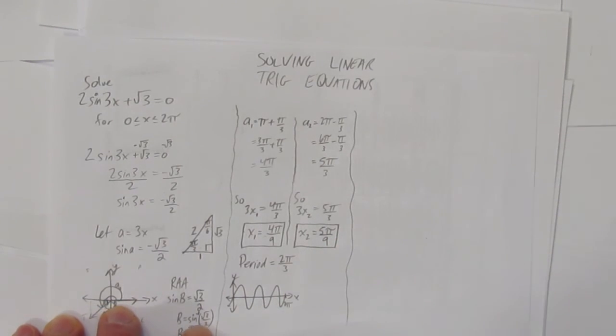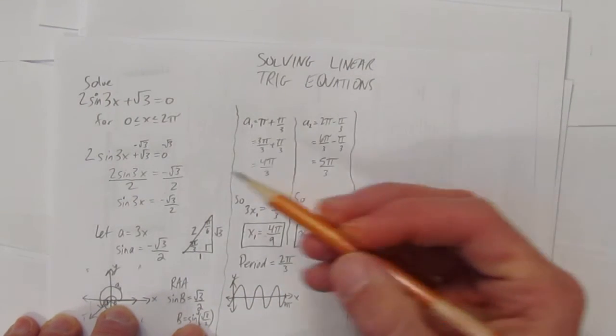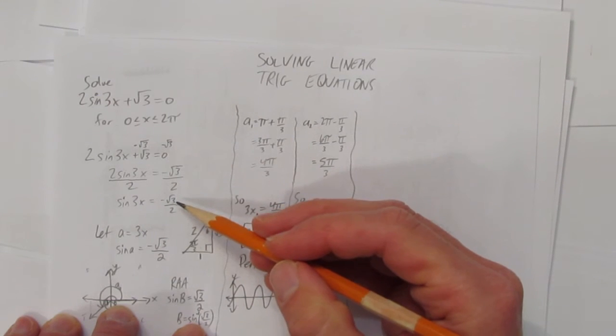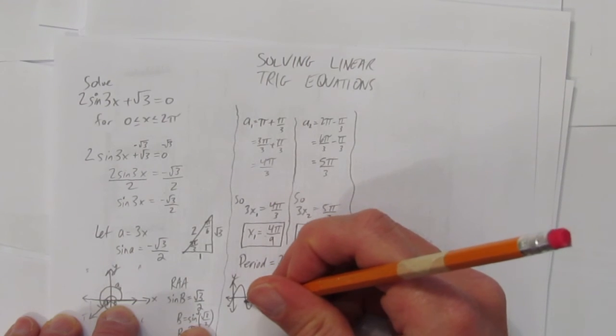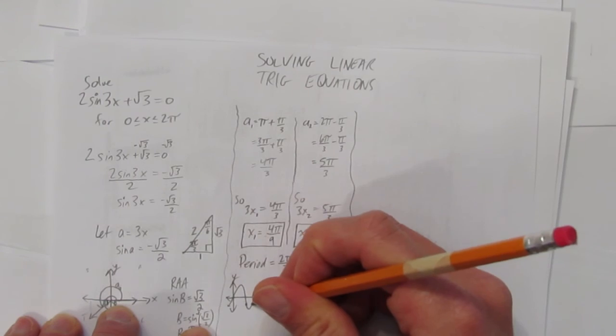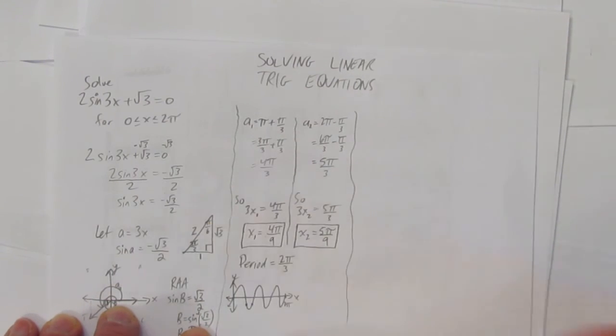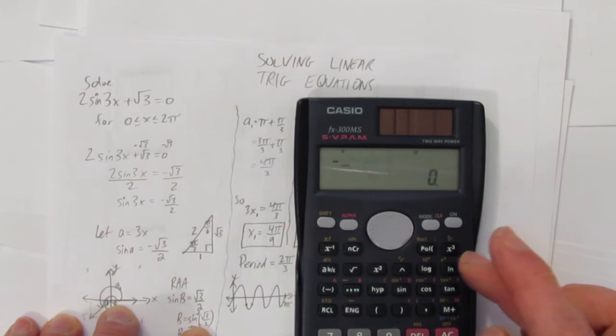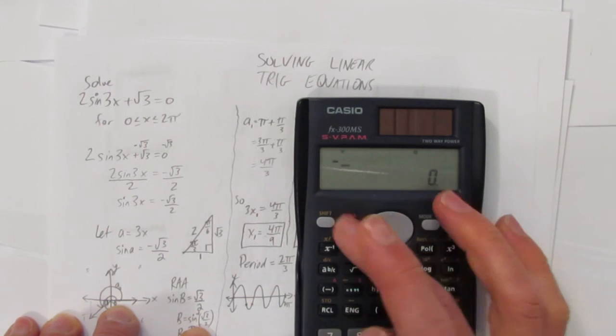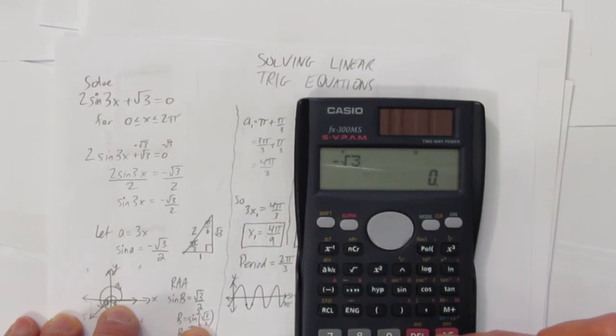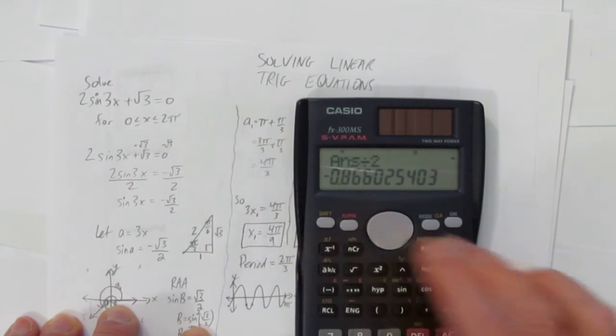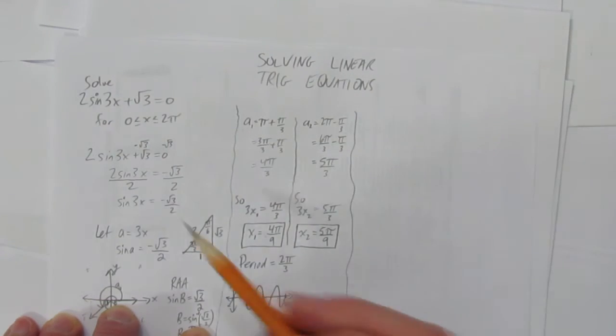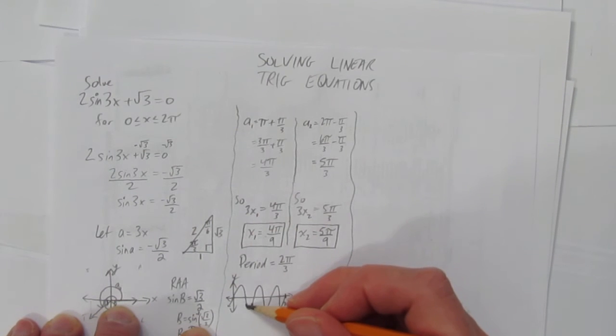Why is that important? Because what we're trying to find out is where is this wave at -√3/2? So that would be somewhere like down here maybe, and down here. Negative √3/2, if you know just from practicing or you can look on a calculator, √3 divided by 2 is like -0.866. So what I'm really asking is where is this function at -0.866?